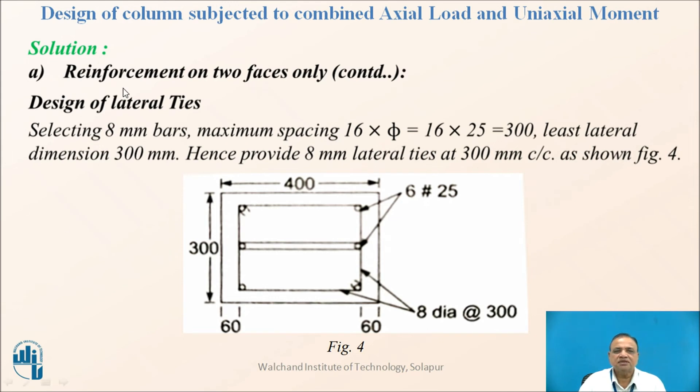Now, this is the reinforcement on two faces. 8 mm diameter bars are used for lateral ties. Maximum spacing 16 times diameter or least lateral dimension that is 300. Therefore, provide 8 mm diameter links at 300 center to center and these are the six bars which are provided on two faces and equally they are spaced.